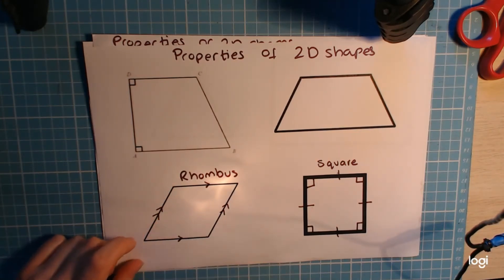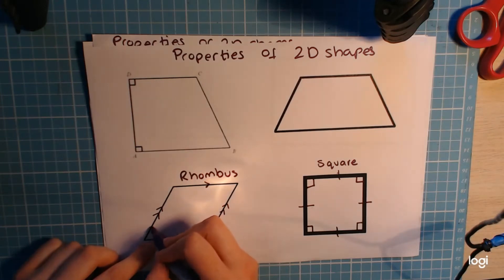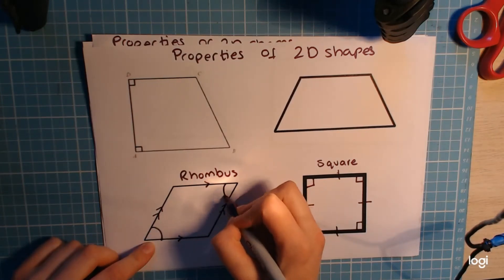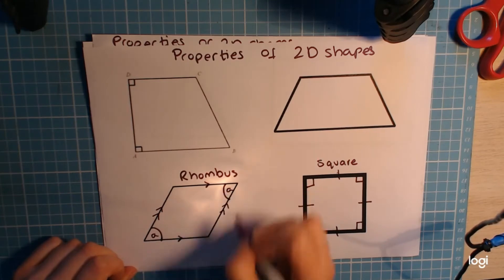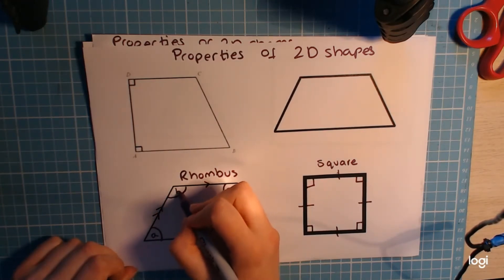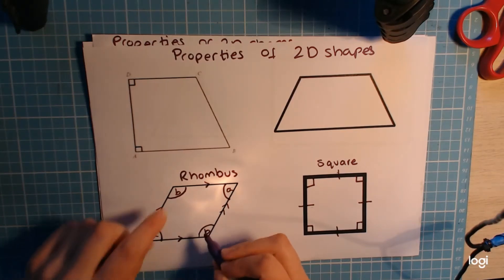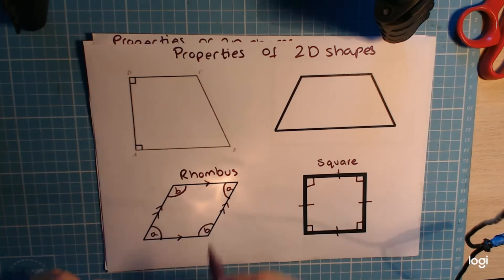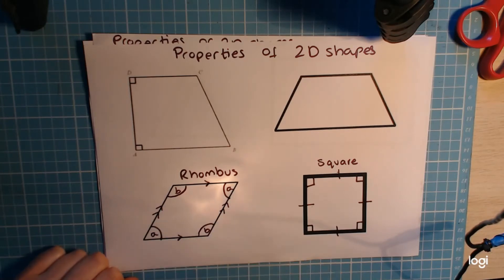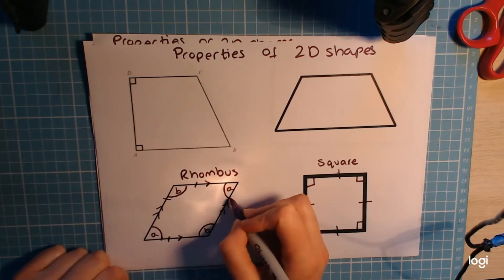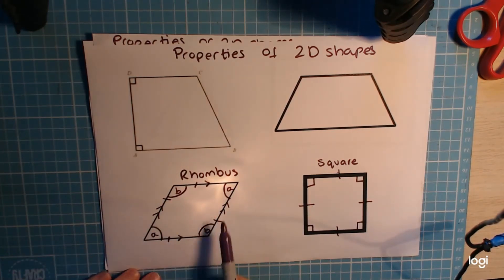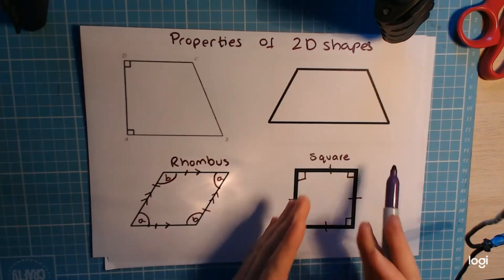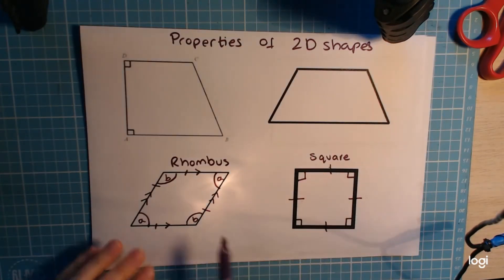A rhombus also has some matching angles. These two angles are the same — I'll call them 'a' and 'a' — and these two angles are the same — I'll call those 'b'. Because they share the same letter, we know they're always the same number. The last important thing about a rhombus — what separates it from a parallelogram — is that all four sides are the same length.